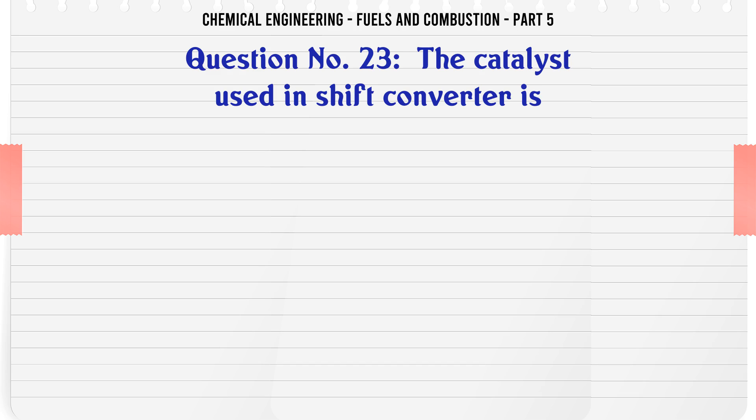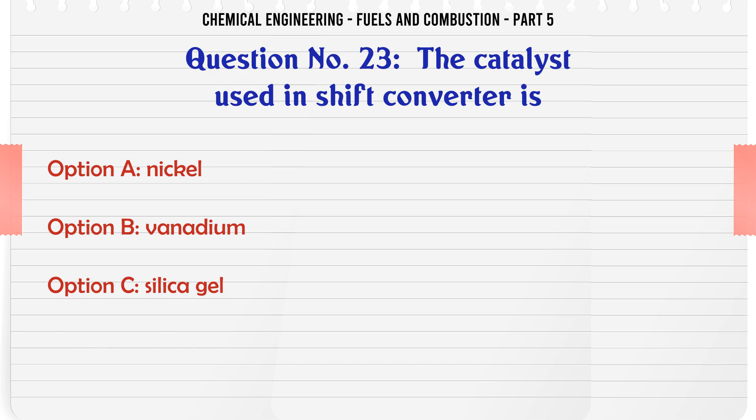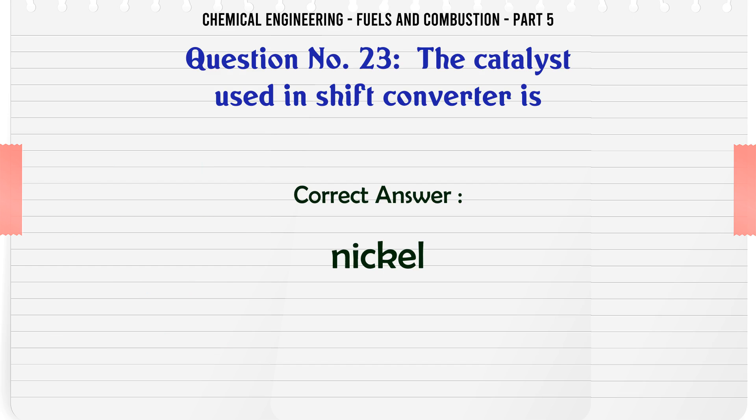The catalyst used in a shift converter is: A. Nickel. B. Vanadium. C. Silica gel. D. Alumina. The correct answer is nickel.